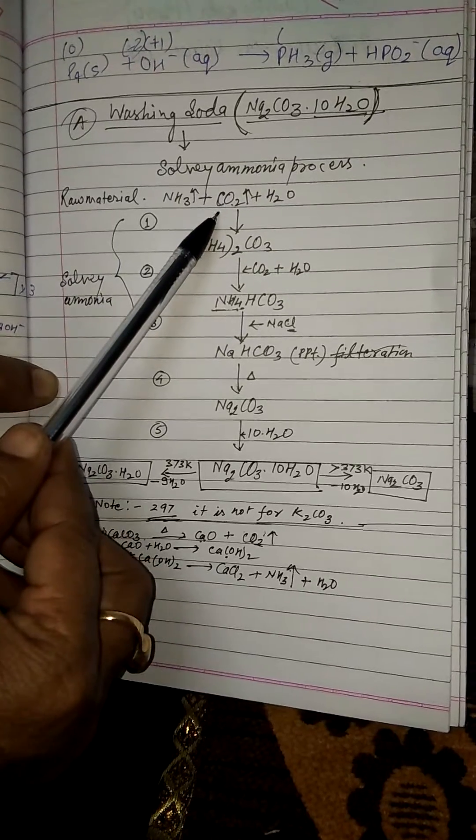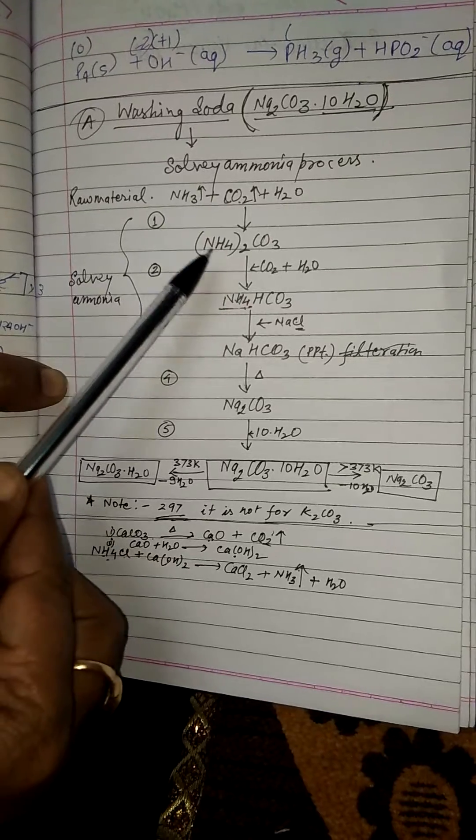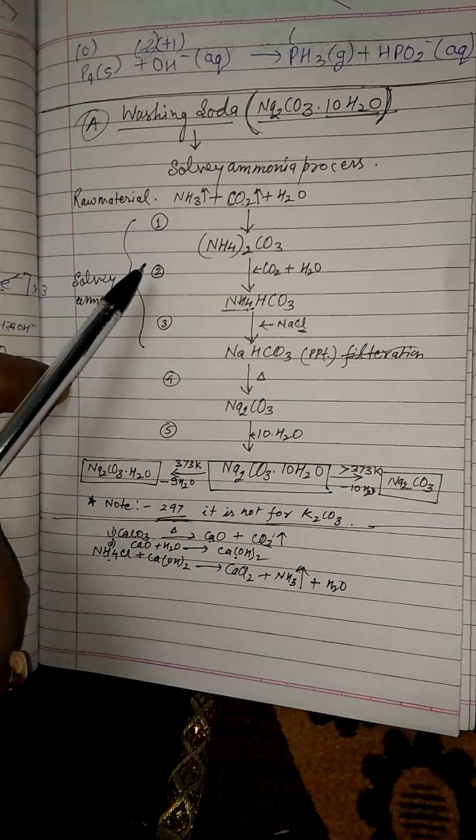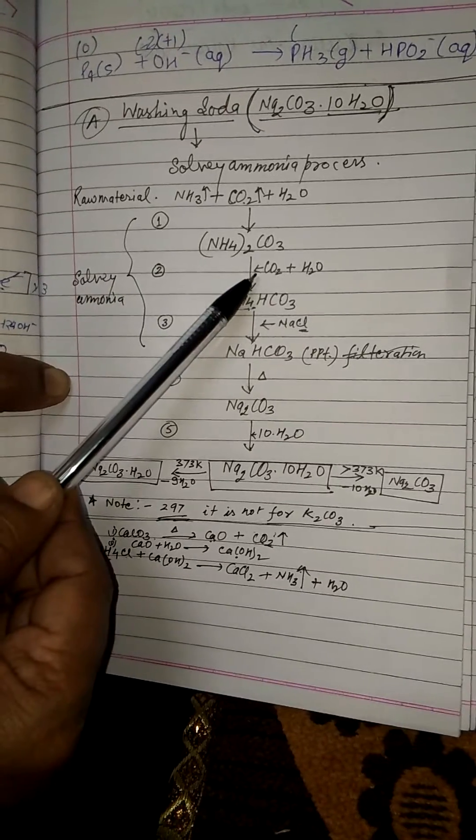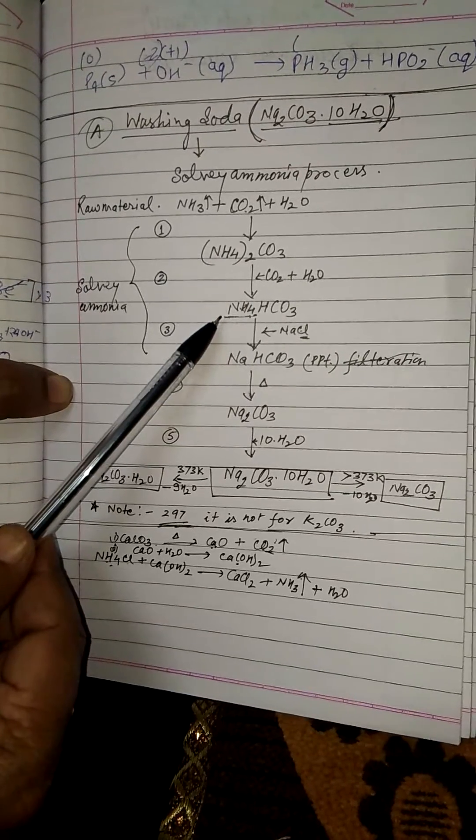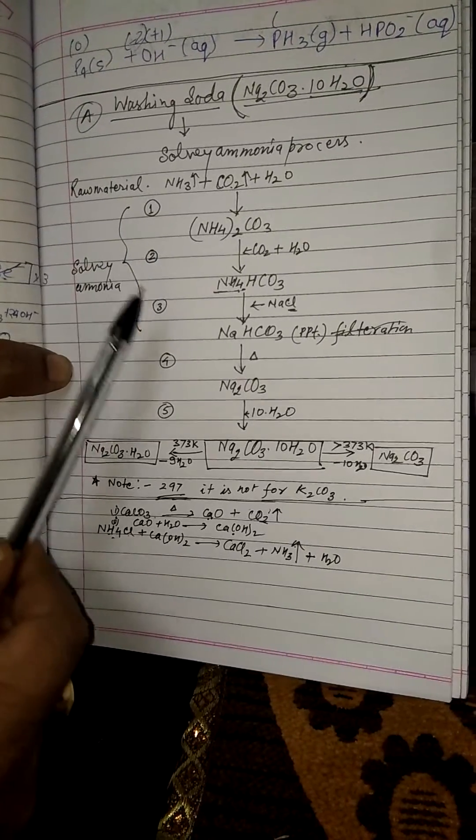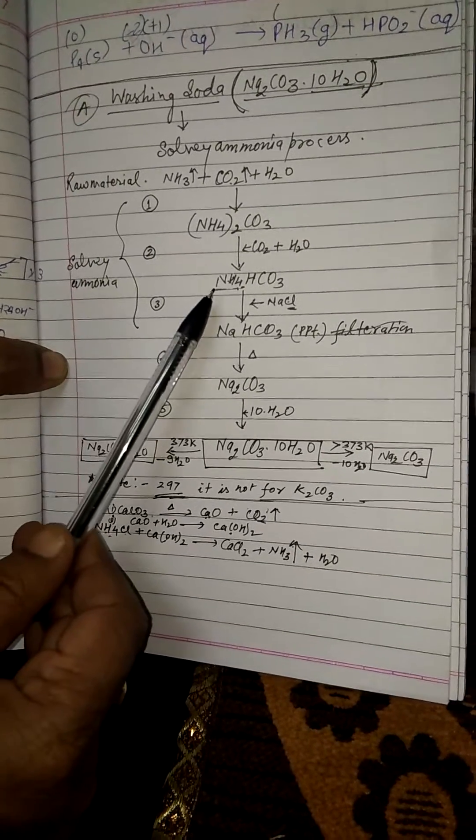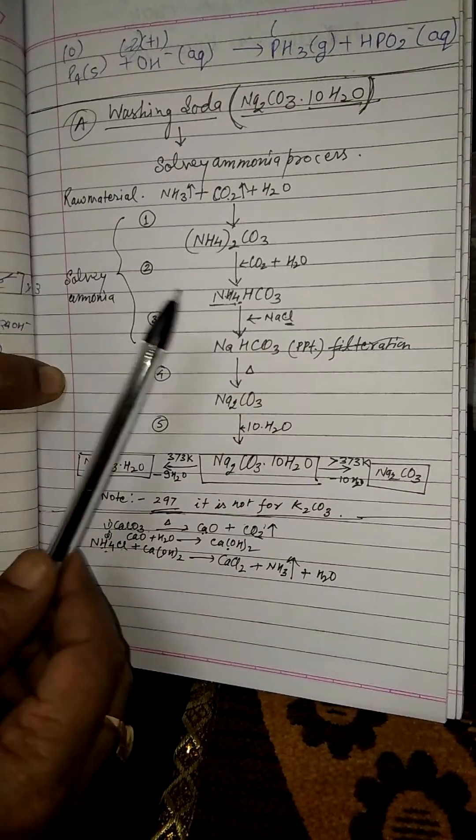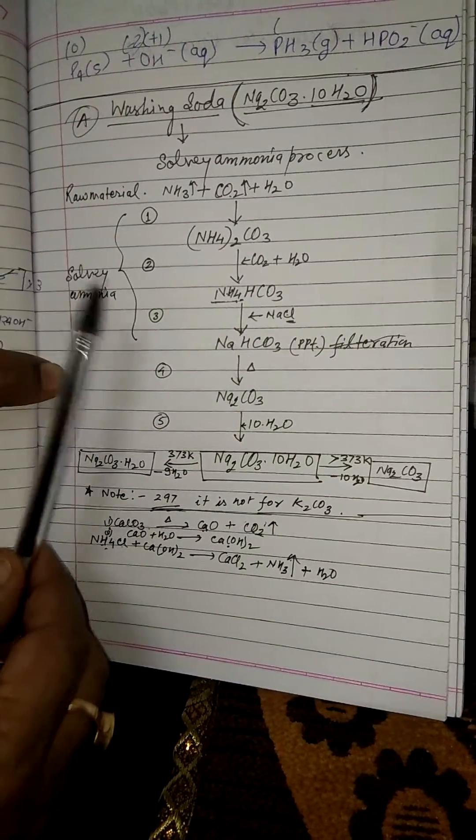They react together and form ammonium carbonate in the first step. Second step: excess carbon dioxide and water react with ammonium carbonate and convert into ammonium hydrogen carbonate. Third reaction: ammonium hydrogen carbonate reacts with dilute brine solution.